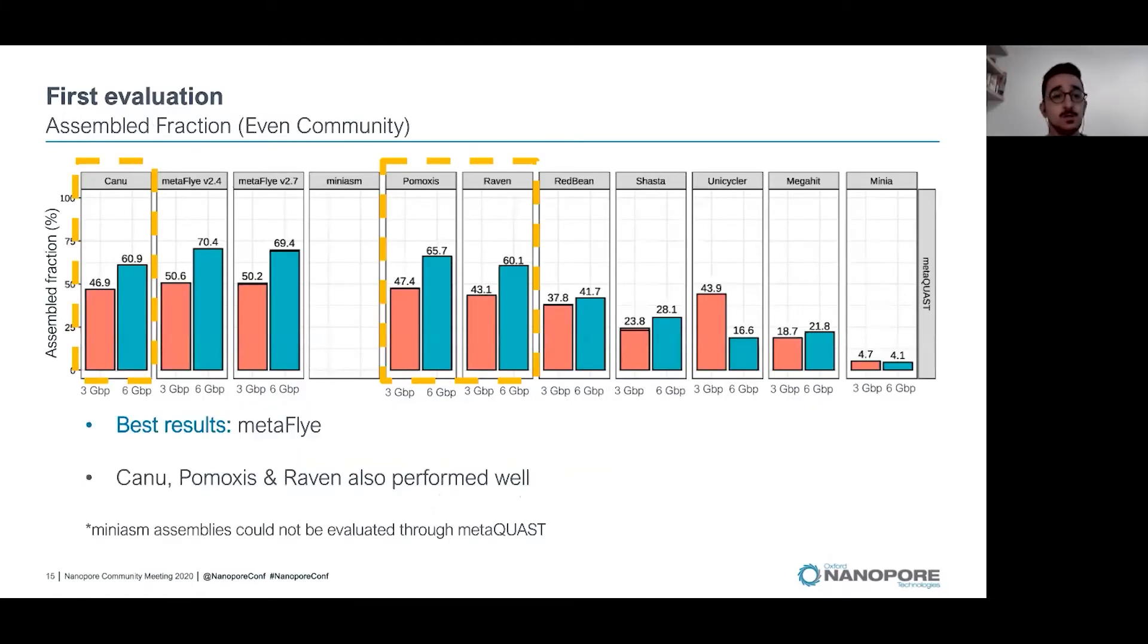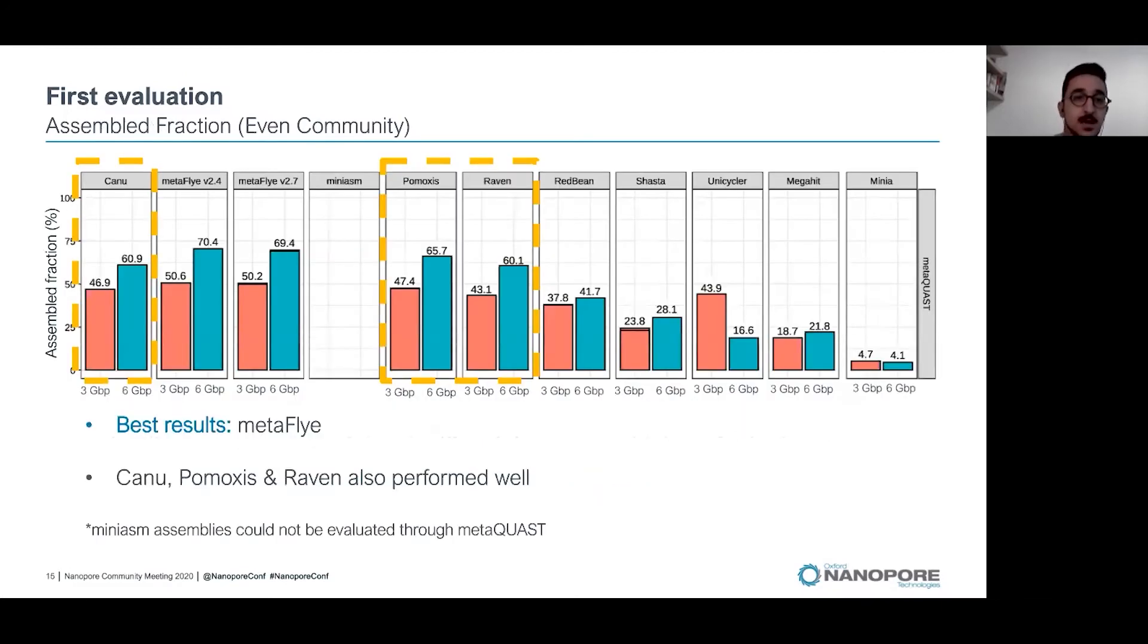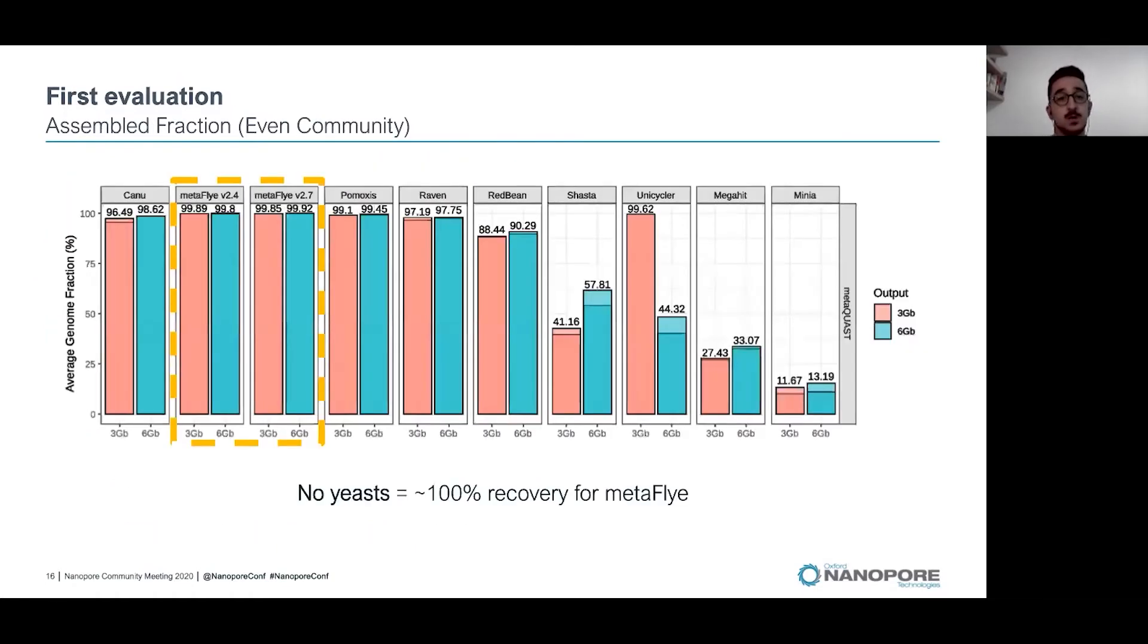Other tools like Canu, Pomoxis and Raven also work well if compared to other tools like RedBean or wtdbg2. You may notice that every tool was far from recovering the entire metagenome. This was because of the yeast, which were in lower fraction. If we remove yeast from the metagenome, we found out that tools like MetaFlye recover almost 100% of the metagenome.